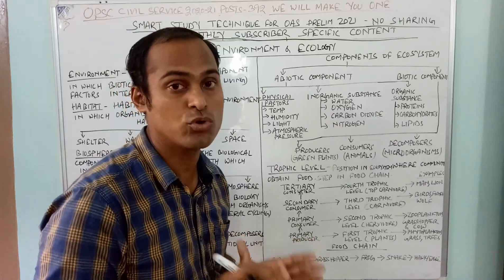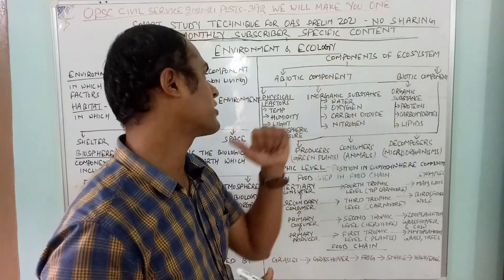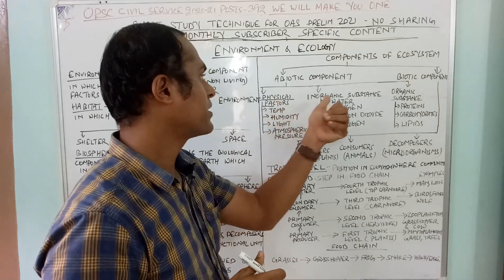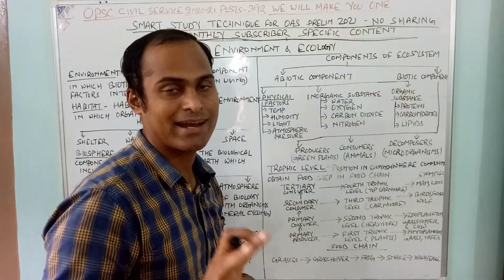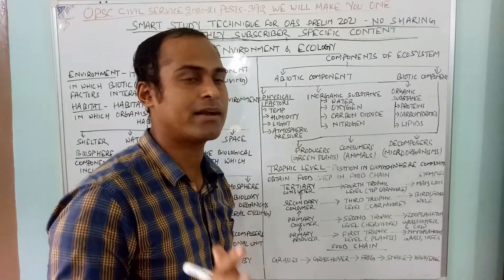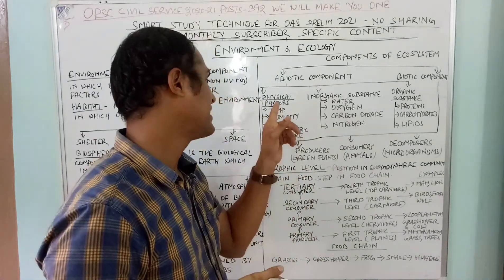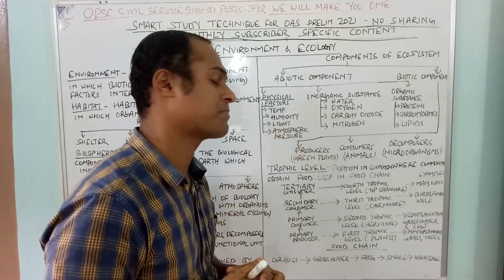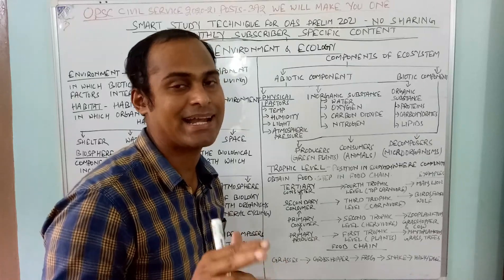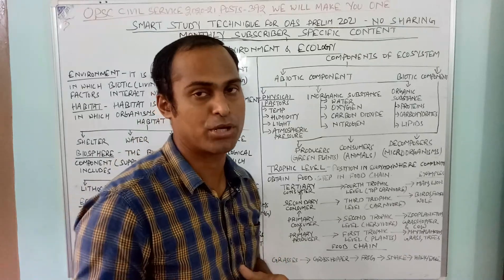The components of an ecosystem are abiotic and biotic. The abiotic component has three types: physical, inorganic, and organic. The physical components include temperature, humidity, light, water, and atmospheric pressure.